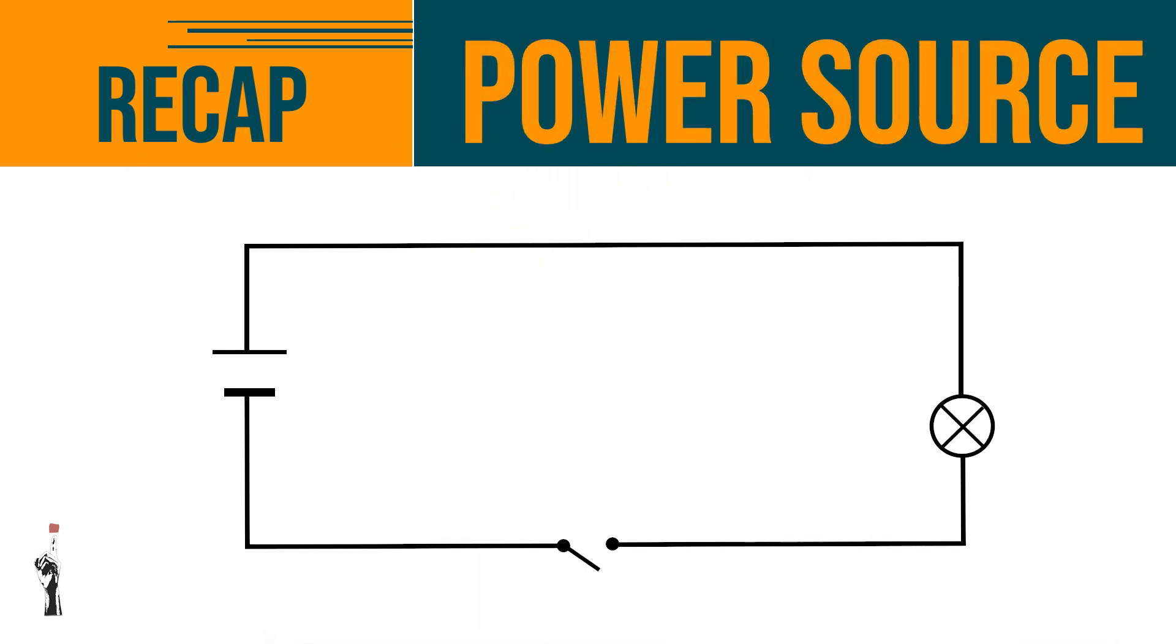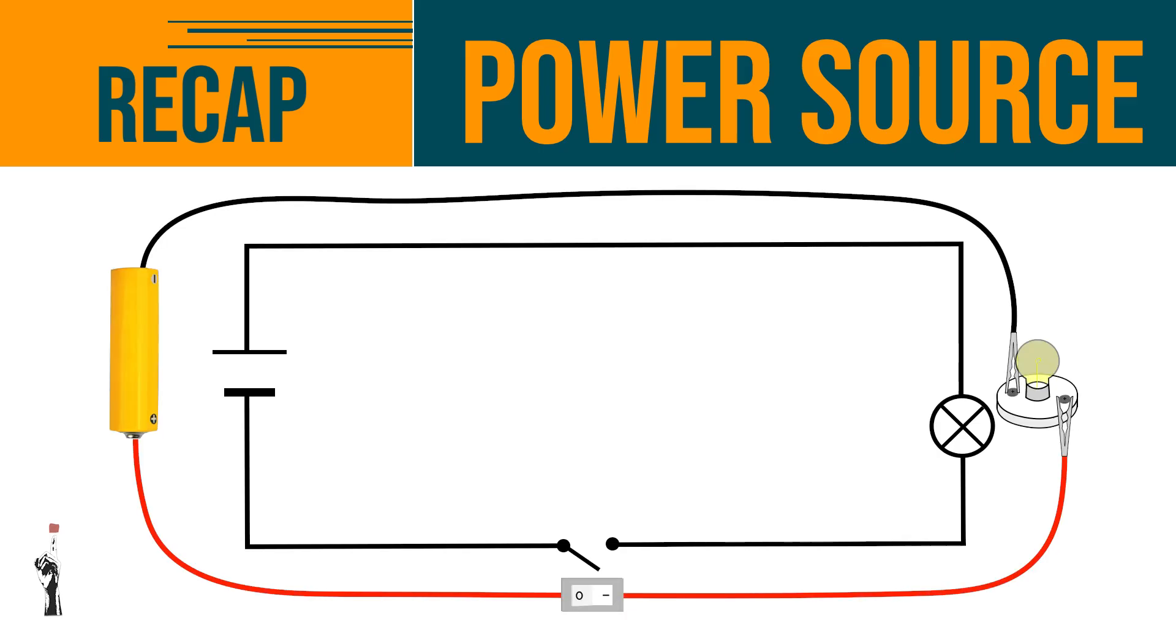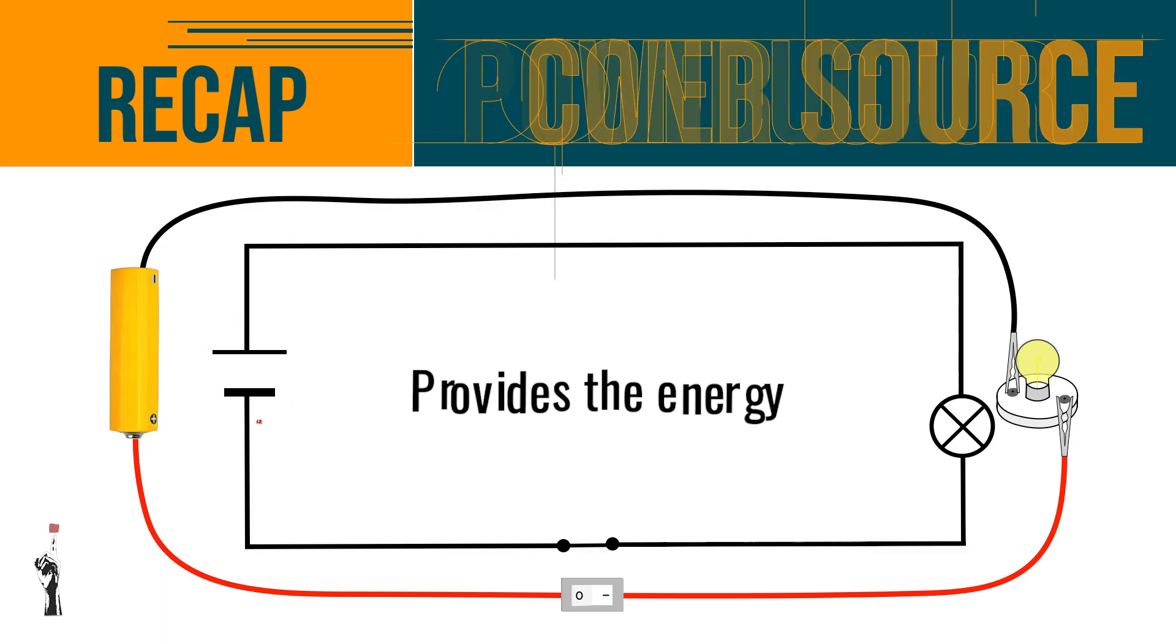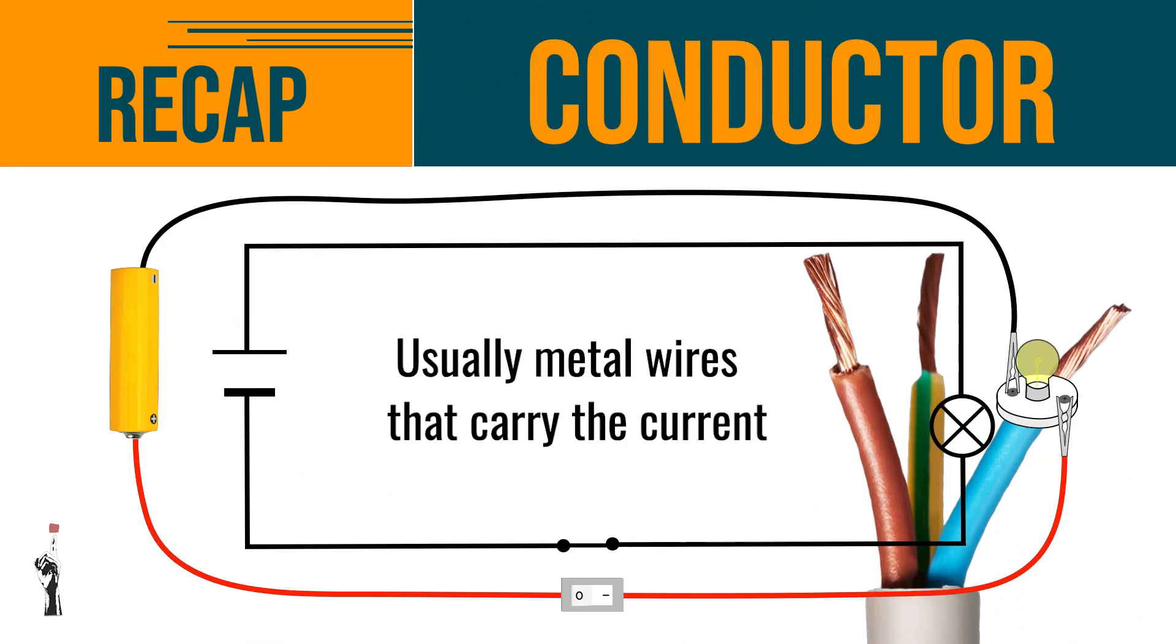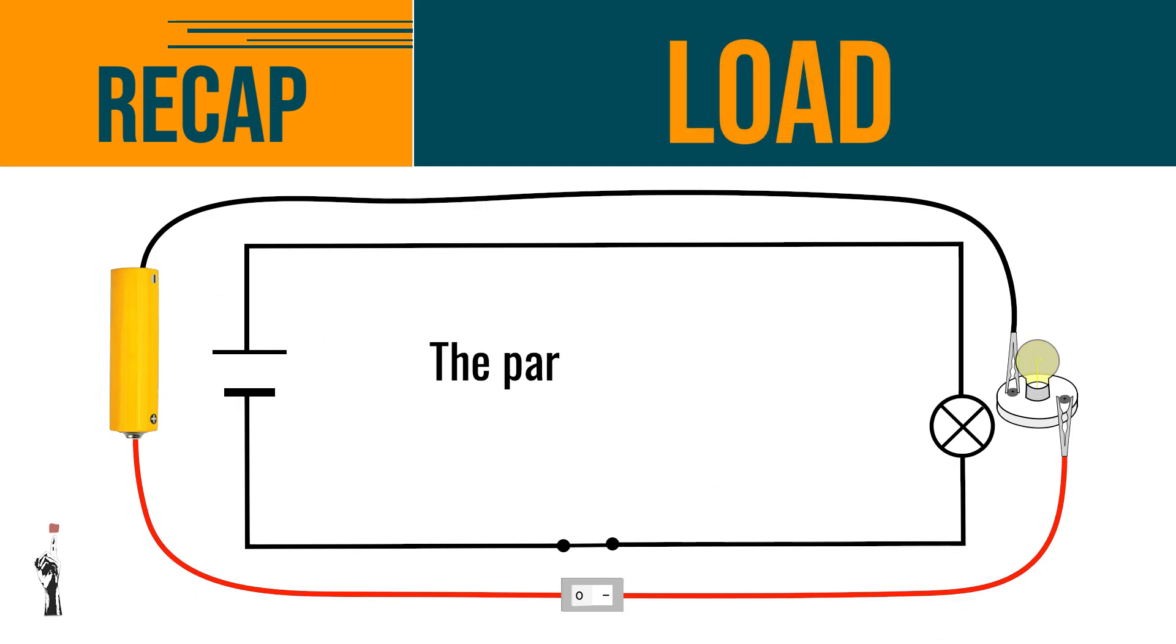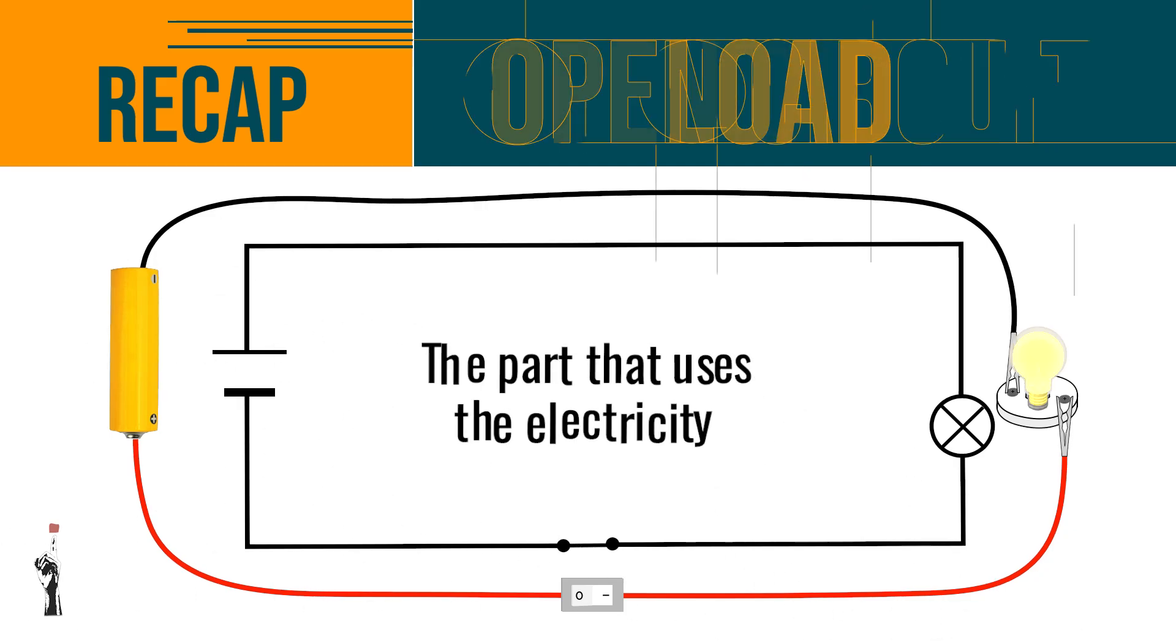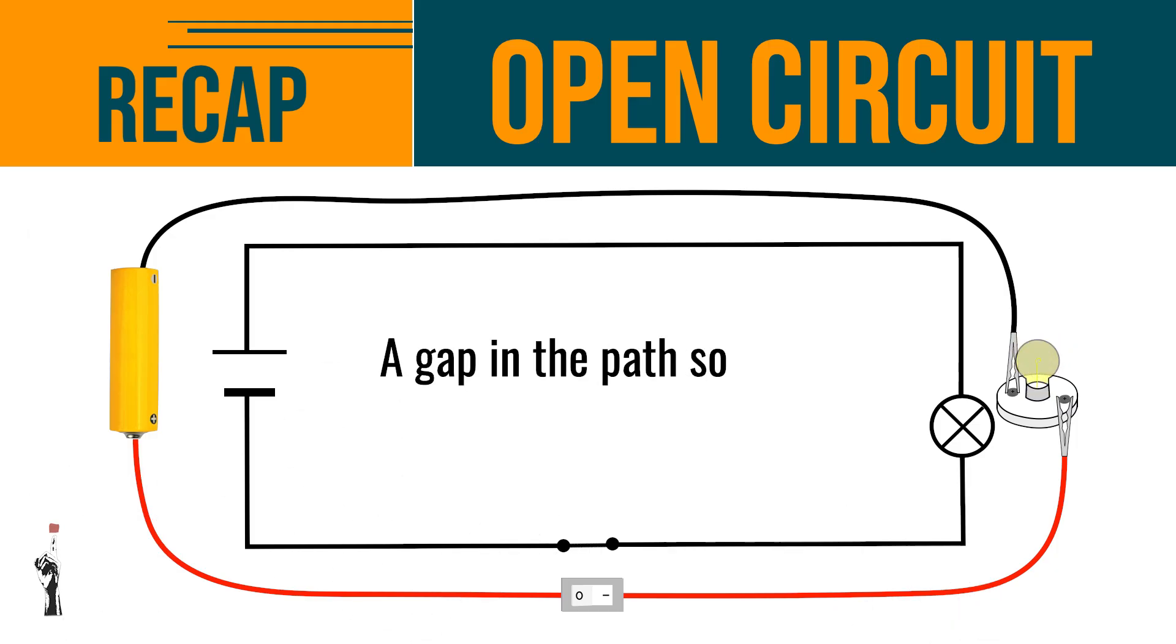The first keyword is power source which provides the energy like a cell or the batteries. The conductor is usually the metal wires that carry the current. The load is the part that uses the electricity like a bulb and the open circuit is a gap in the path so the current cannot flow.